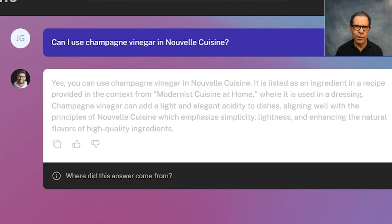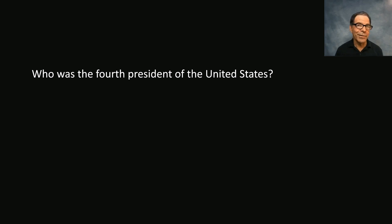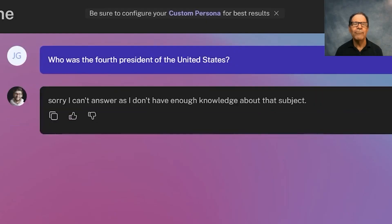Now let's ask it a trick question to check that it's only using information we provided. Who was the fourth president of the United States? The answer is James Madison, by the way. But this GPT should not know that answer because it's not supposed to use information other than what we provided, and because it's not supposed to be used for general information purposes. Very good — it doesn't have knowledge about that, and it's not supposed to.